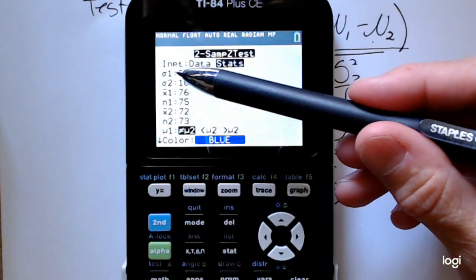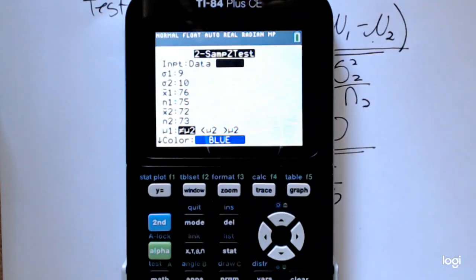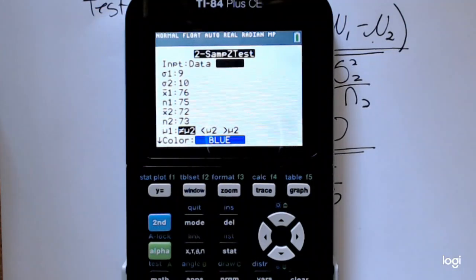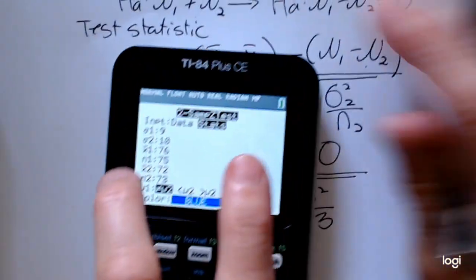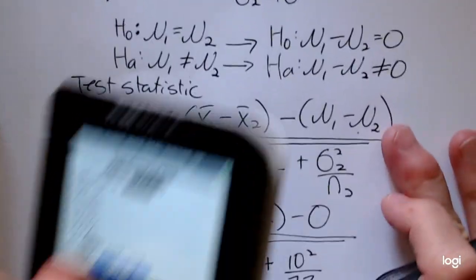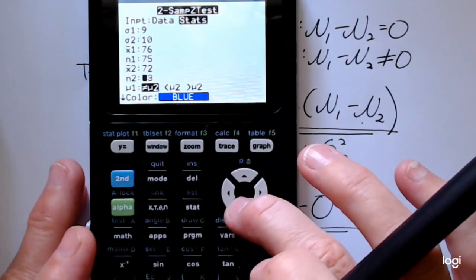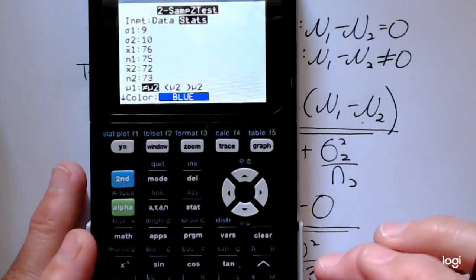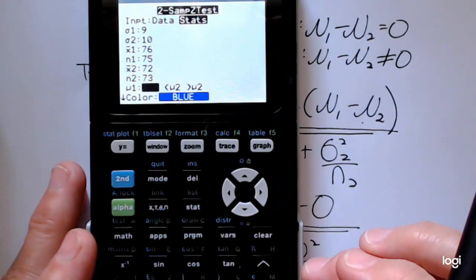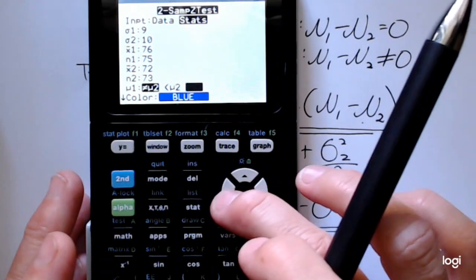The calculator asks for the two population standard deviations. Make sure you keep track of what you called sample one and sample two, what's population one, what's population two. I went ahead and input all the information from the problem. If you down arrow, you can change the direction of the alternative. This is a two-tail test, so we have not-equals for the alternative. If I had a single-tailed test, I could certainly change that here.